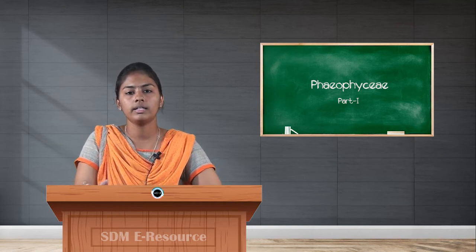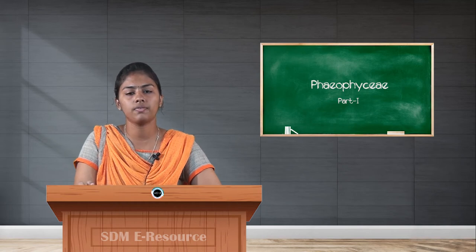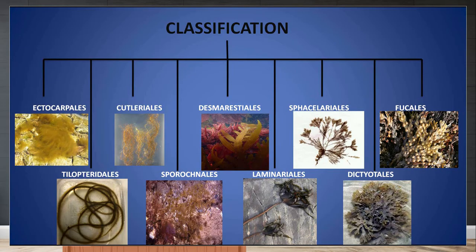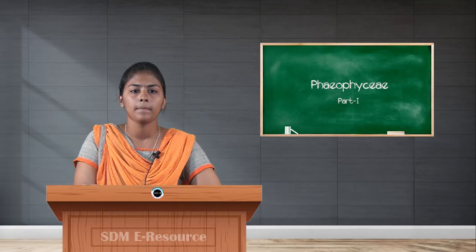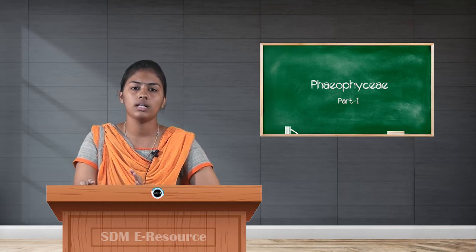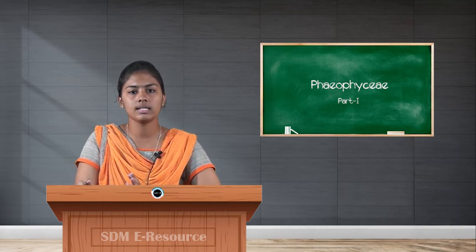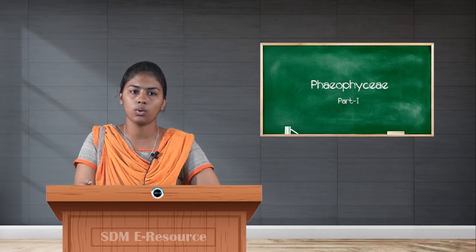In 1945, Fritsch classified the members of Phaeophyceae into nine orders: Ectocarpales, Tilopteridales, Cutleriales, Sporochnales, Desmarestiales, Laminariales, Sphacelariales, Dictyotales, and Fucales. In this classification, the least primitive is Fucales and the most primitive is Ectocarpales.